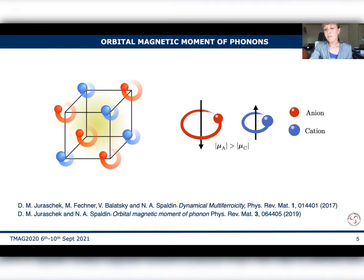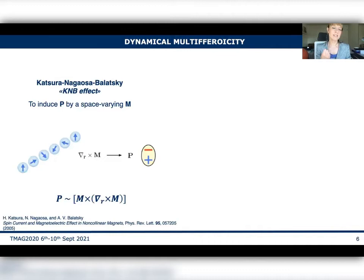The formalism was already here in 2017, was published, and it comes as the dual effect of the well-known Katsura-Nagaosa-Balatskii one. So Balatskii published in 2017 the formalism for what I am about to tell you. For those who are not familiar with the Katsura-Nagaosa-Balatskii, it states the possibility to induce an electric polarization by means of a space-variant magnetization.